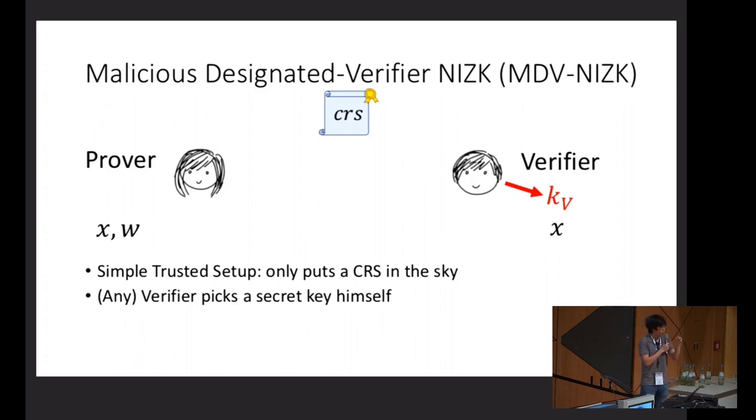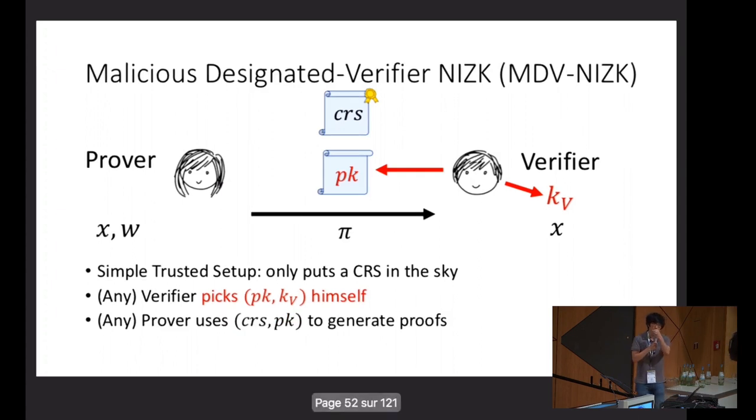But now, in some sense, the proof produced by the prover has to depend to this verification key. The verifier picks a public key that depends on this verification key and puts that in the sky. Now, given this CRS and this public key, any prover looking at both can publish a proof and generate a proof π. The verifier, depending on this verification key, can decide whether to accept or reject the proof.